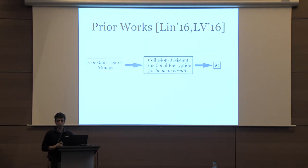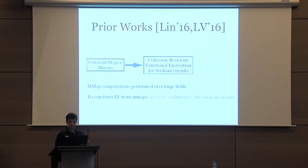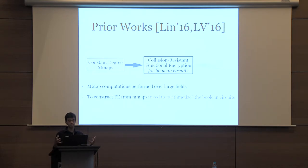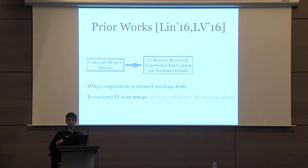To show this template, let us revisit the template of Lynn and Maikotanathan. They show how to construct IO from constant-degree multilinear maps by going through collision-resistant function encryption for Boolean circuits. To construct this, you need to start with multilinear maps, which natively perform computations on elements of large fields. To construct FE for Boolean circuits, the first step would be to arithmetize the Boolean circuit, and then perform map computations over this arithmetic circuit. This arithmetization step could potentially increase the degree of the Boolean circuit.